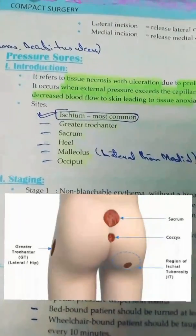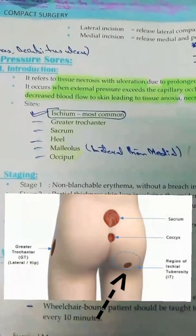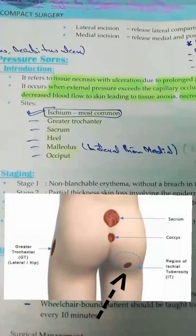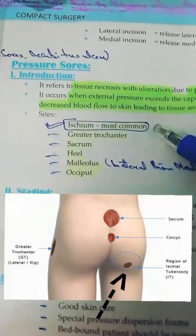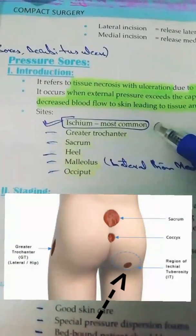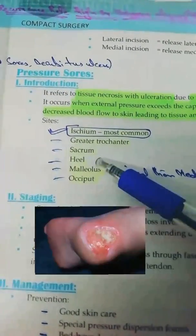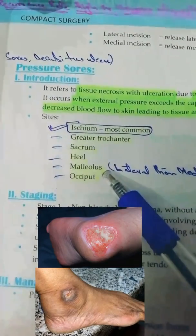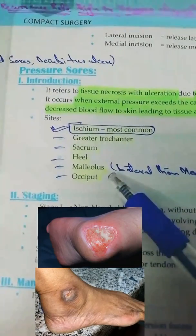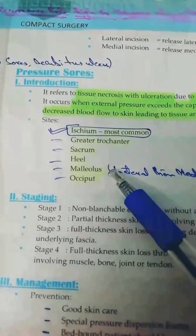The most common site of pressure sores is the ischium. The ischium is the bone — ilium, ischium, and pubis — the three parts that form our pelvic girdle. The pelvis or buttocks area is referred to as the ischium, and that is the most common site due to prolonged bed rest. Other common sites include the greater trochanter, sacrum, heel, and malleolus. The malleolus refers to the bony prominences on each side of the ankle, with the lateral malleolus being more common than the medial malleolus.